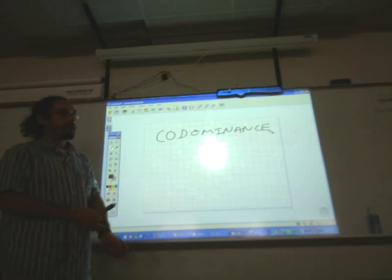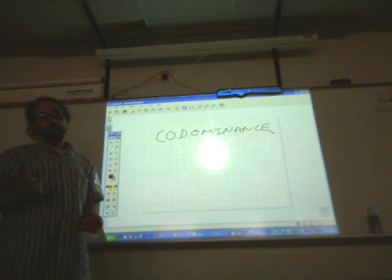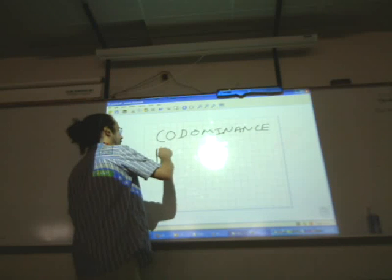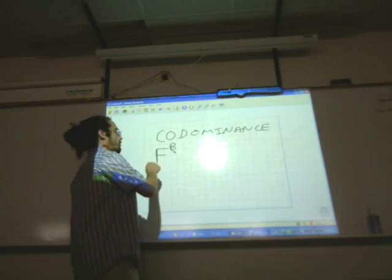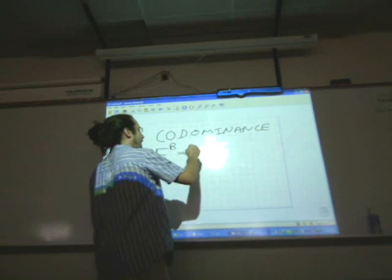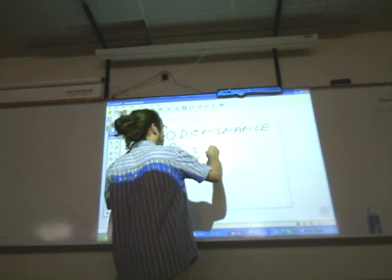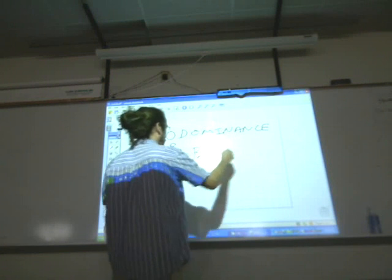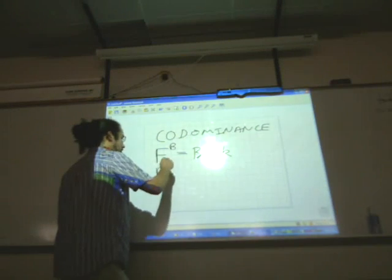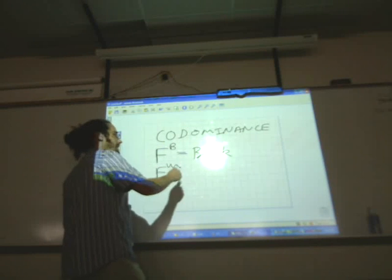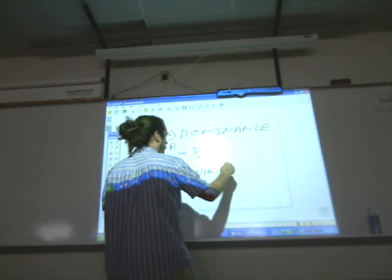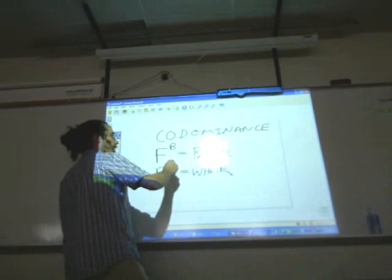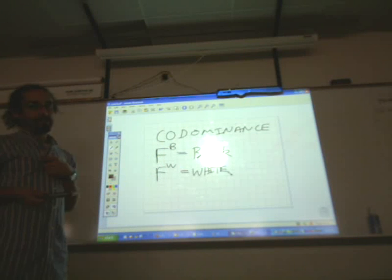A good example of this in your book is the rooster. Feather black and feather white, and we show that with a superscript. A superscript is above the regular script or above the regular letter. So FB is black, and notice it's capital F, so that tells us it's dominant, and FW, feather white, of course, is white. You can say FW, or F white, or feather white, or F black. There's a little variety of ways you can say it, and it's all correct.